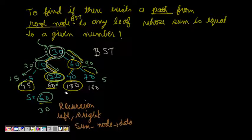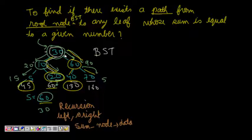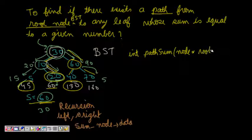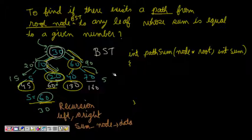So we have to find a path from the root to some leaf node whose sum of data of the nodes in the path equals the given sum. Our function will be something like: int pathSum, given the root node — node* root — and then int sum.